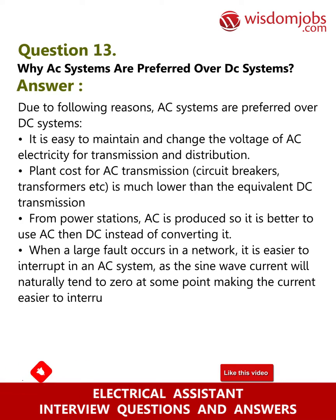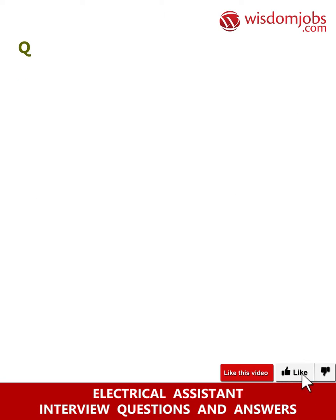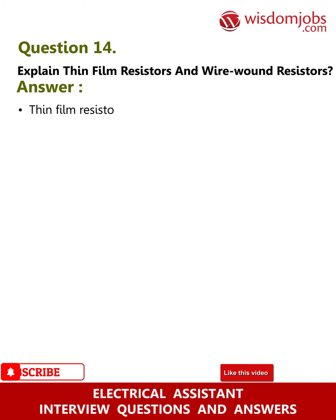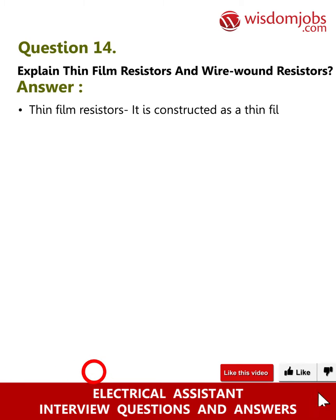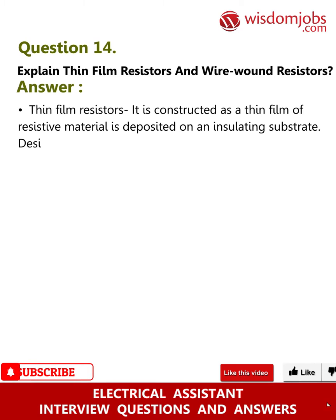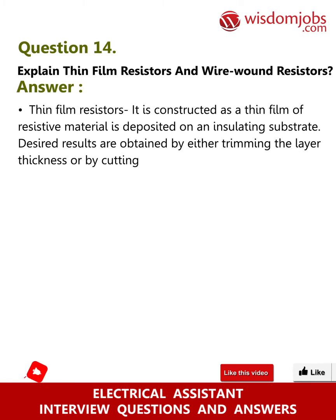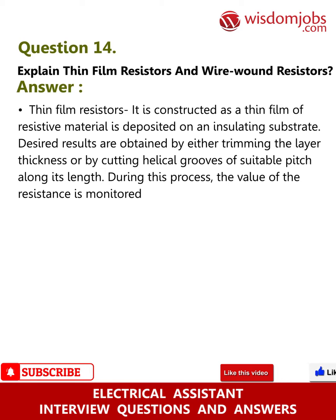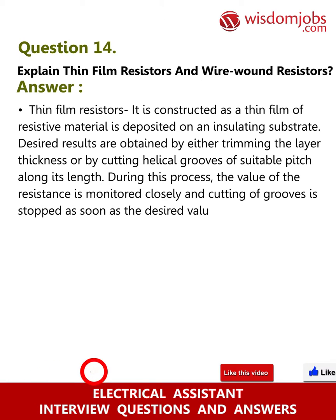Question 14: Explain thin film resistors and wire wound resistors. Answer — Thin film resistors: A thin film of resistive material is deposited on an insulating substrate. Desired results are obtained by either trimming the layer thickness or by cutting helical grooves of suitable pitch along its length. During this process, the value of resistance is monitored closely and cutting of grooves is stopped as soon as the desired value is obtained.